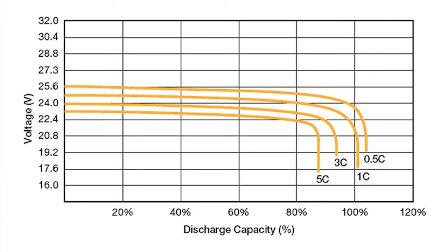Do all batteries have this effect? No. When looking at the same diagram but for a lithium battery, you can see that even at 1C the capacity is slightly higher than the rated amp-hour value. Even at a discharge of 3C — so 3 times the capacity, 300 amps in this case — the capacity is still about 90%.